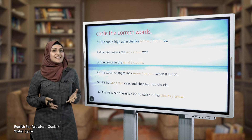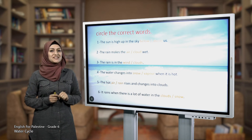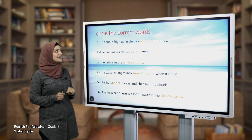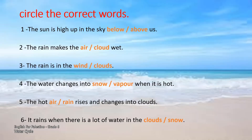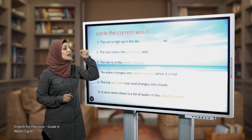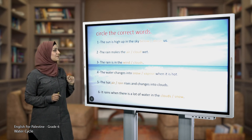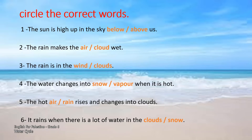Now after we explained how the water cycle works, let's check our understanding and try to answer the following questions. Let's circle the correct words. One: the sun is high up in the sky — below or above us? The correct answer is above us. Two: the rain makes the air or the cloud wet? The rain makes the air wet.